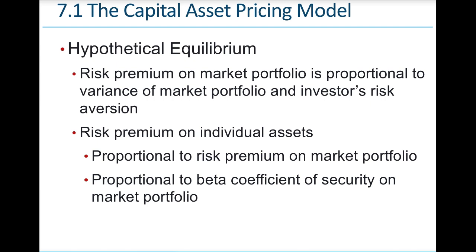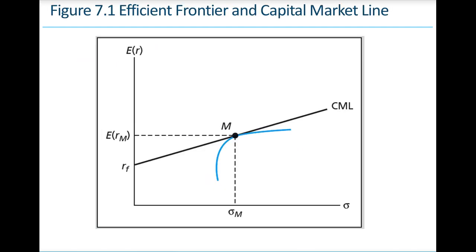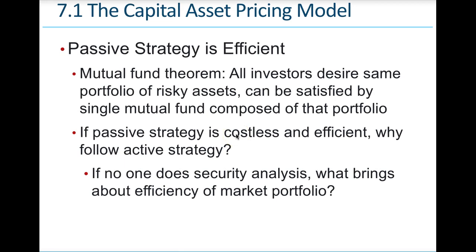The risk premium on individual assets is proportional to the risk premium on the market portfolio and proportional to the beta coefficient. We want to make sure we're getting the best return for the risks we're taking on in total. This graphic describes where we want to be — looking at the CML and the effective return, we want to be at the most efficient position.